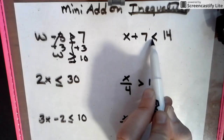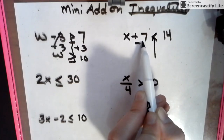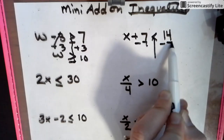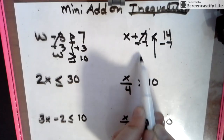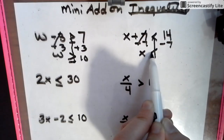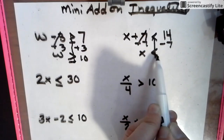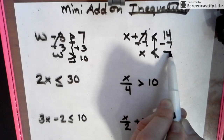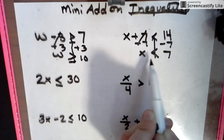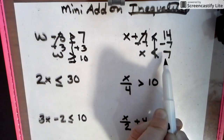Moving on, we draw that line down. Add 7, we subtract 7. Whatever you do to one side, we do to the other. X has to be less than — the numbers have to be less than 7. So any number less than 7 works.